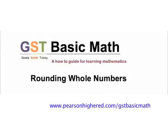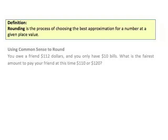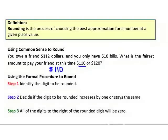Now let's take a look at a definition. Rounding is the process of choosing the best approximation for a number at a given place value. Here's a common sense approach: you owe a friend $112 and you only have $10 bills. What is the fairest amount to pay — $110 or $120? The answer is $110, because it is a better approximation — it's closer to $112 than $120 is. That's as simple as rounding is.